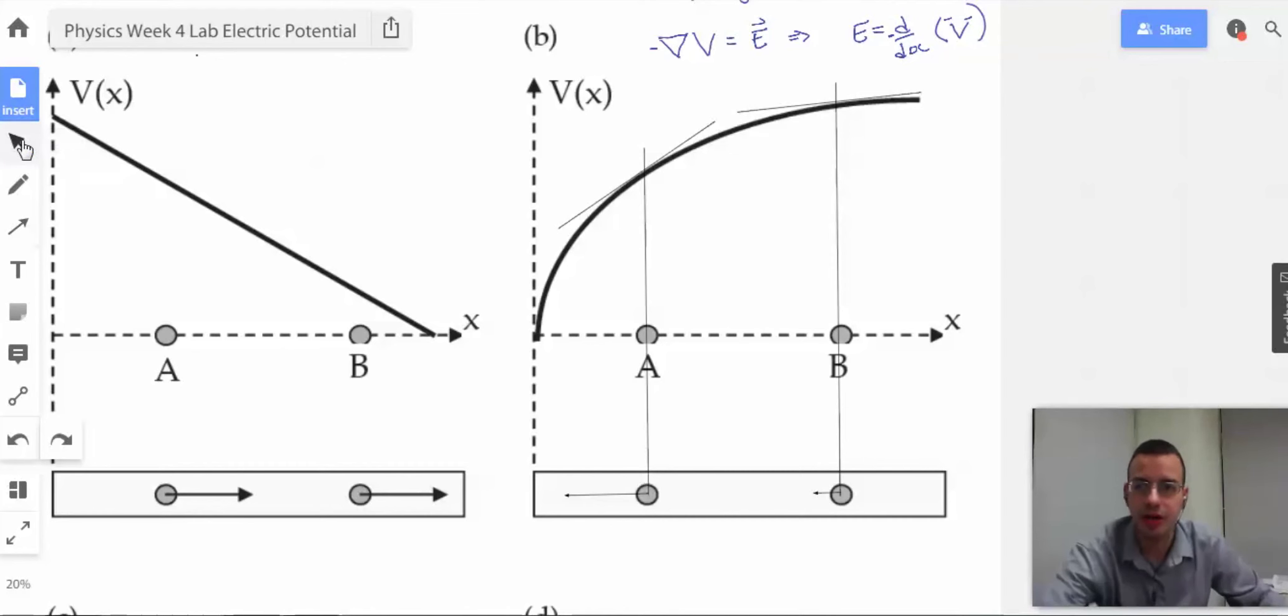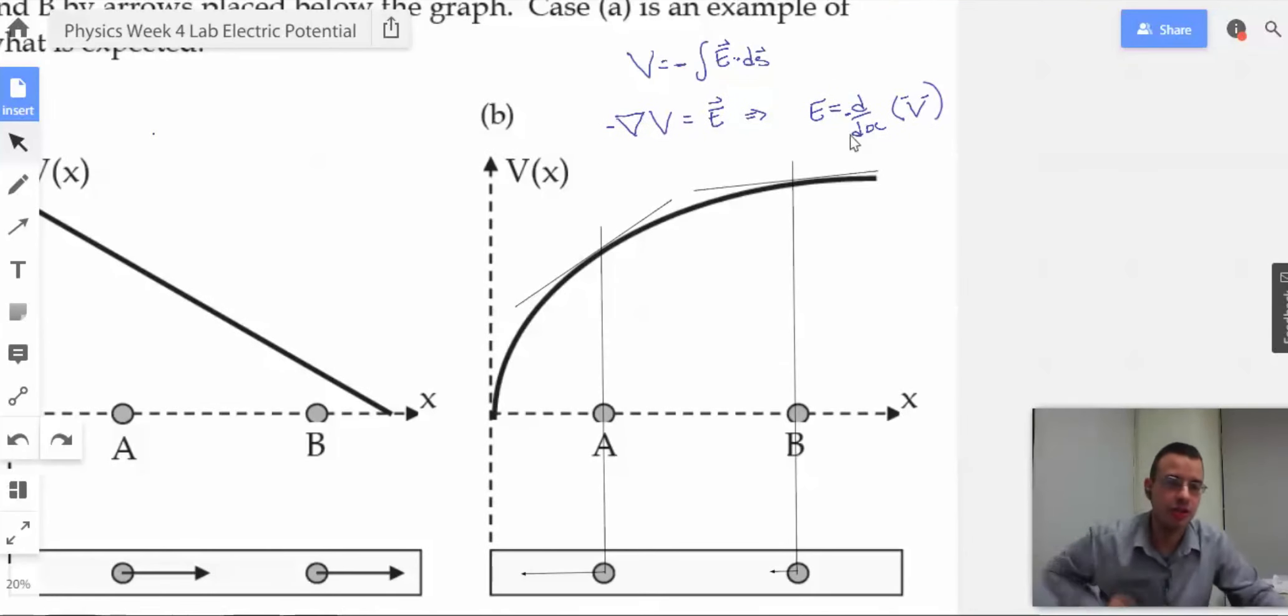Alright, seemed like a reasonable concept. And the reason that we got that was through using our formula for voltage equals negative integral E ds and then backtracking to find out that electric field is just the negative derivative with respect to x of voltage.